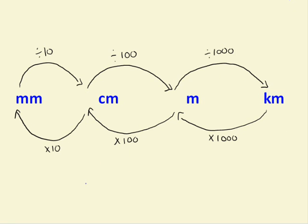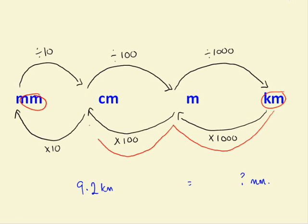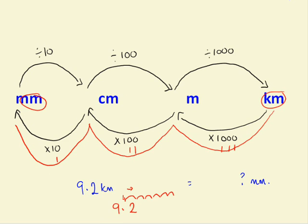How about this one? 9.2 kilometres equals how many millimetres? To do this, we're going from kilometres to millimetres, so we times by 1000, then times by 100, then times by 10. The answer's going to get bigger because we're multiplying. So how many times do I move this decimal place? Let's count: 1, 2, 3, 4, 5, 6 times. The decimal place moves to the right 6 times, and we put zeros in. So 9.2 kilometres is 9,200,000 millimetres.